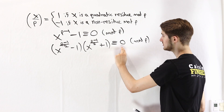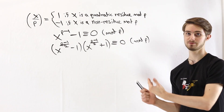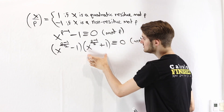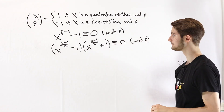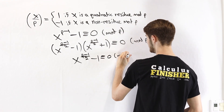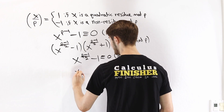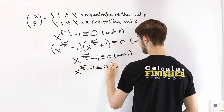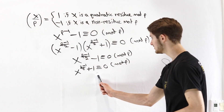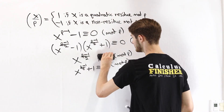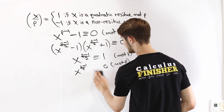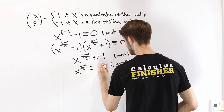When a number is congruent to 0 mod p, it must be a multiple of p. Since p is prime, one of the two factors must be a multiple of p. So either x^((p-1)/2) - 1 ≡ 0 mod p, meaning x^((p-1)/2) ≡ 1 mod p, or x^((p-1)/2) + 1 ≡ 0 mod p, meaning x^((p-1)/2) ≡ -1 mod p.